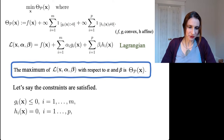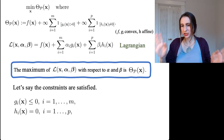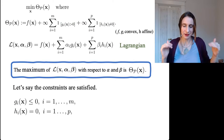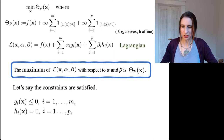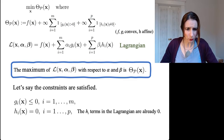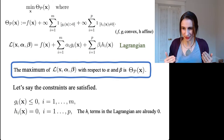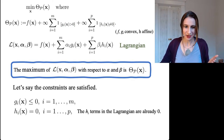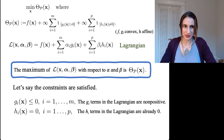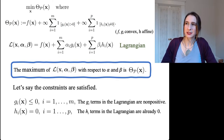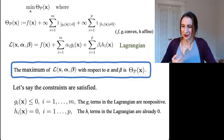Let's say the constraints are satisfied — all of the gi are less than or equal to zero, and all of the h's are equal to zero. In that case, the hi terms in the Lagrangian are already zero because the constraints are satisfied, so there's nothing to do there. The gi terms are non-positive, so if we want to choose alpha to maximize the Lagrangian, how would we do that?